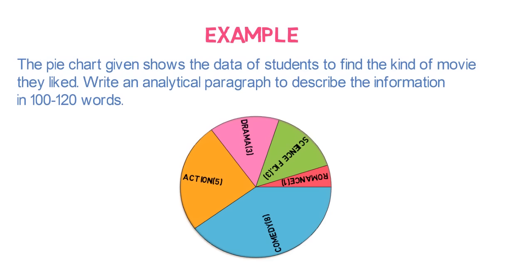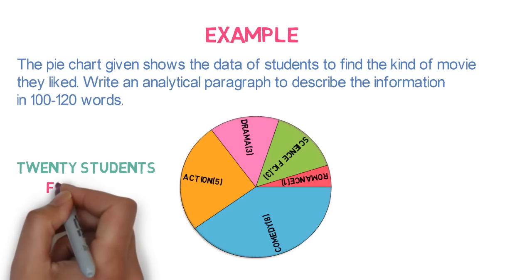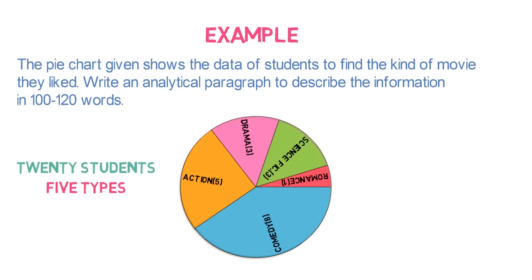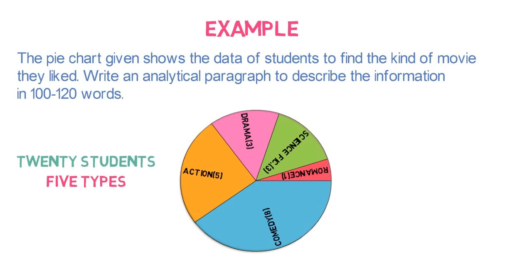From the chart, it can be seen that a total of 20 students participated in the survey and 5 types of movies were there. So, we can write the introduction in this way: The pie chart illustrates 5 different kinds of movies rated by 20 students.